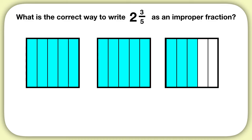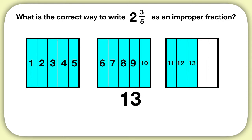Now what should the numerator of my improper fraction be? To find your numerator, count up the pieces. We have 13 pieces, so my numerator will be 13. Now finish the last step of this problem on your own. How can I write 2 and 3 fifths as an improper fraction? Well, 13 is my numerator, and we're working with fifths, so my denominator will be 5. As an improper fraction, this is 13 fifths.